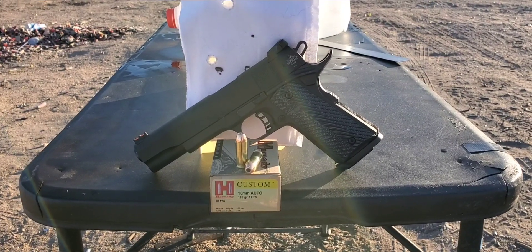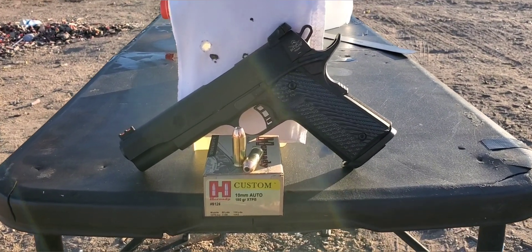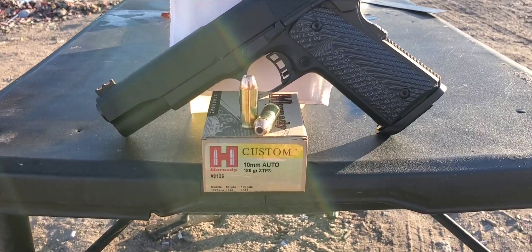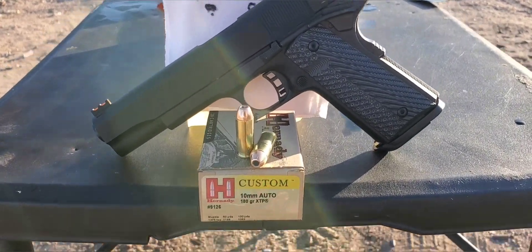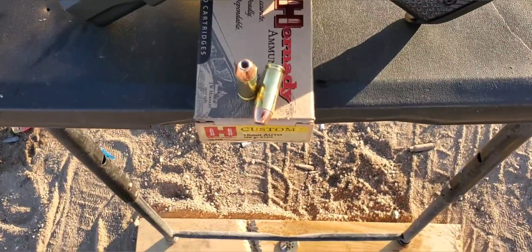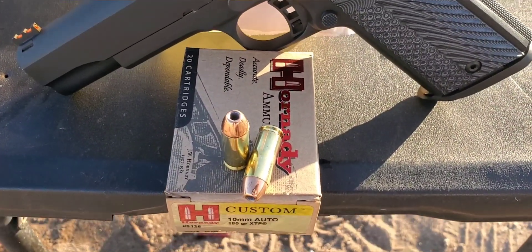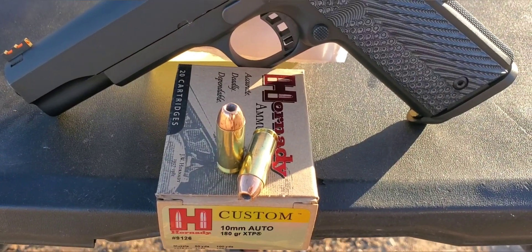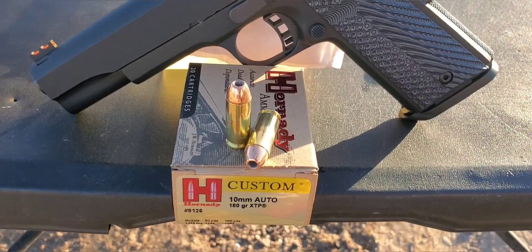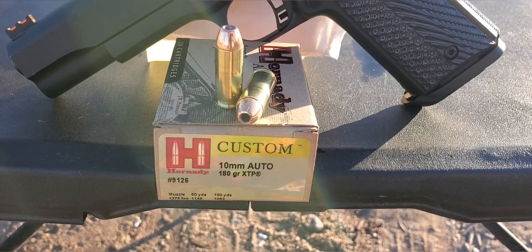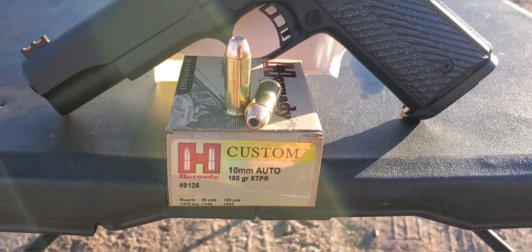Alright, here we go. This one's going to be a 10mm test. Today we have the Hornady Custom that has a 180 grain XTP. Here's what this one looks like. Really good looking round. Does have just your normal brass case on it. And box rated velocity is 1275.